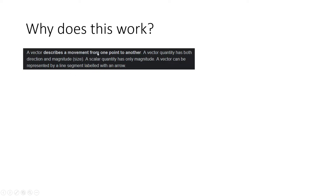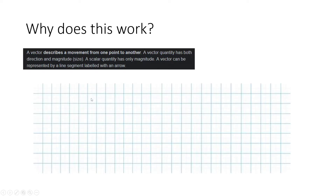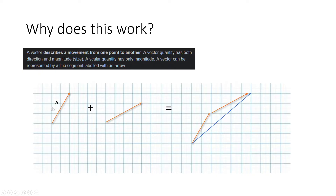But why does equating coefficients work? We need to go back to the definition of a vector — a vector describes the movement from one point to another and has both direction and magnitude. If vector A travels 2 units right and 3 units up, that is completely different from vector B travelling 4 units right and 2 units up. These vectors move in different directions, and when added they create a resultant vector of 6 right and 5 up, equal to A + B. The coefficients of A and B are both 1, because there is only one way to form this vector.